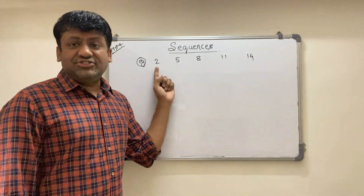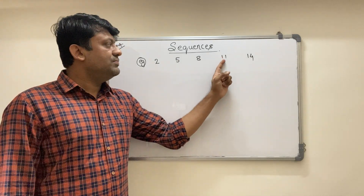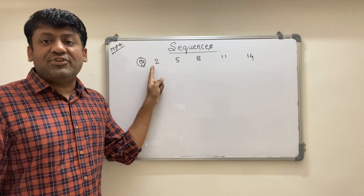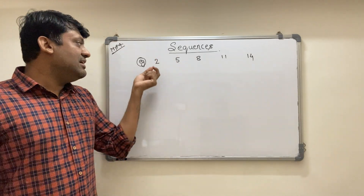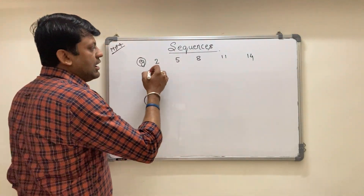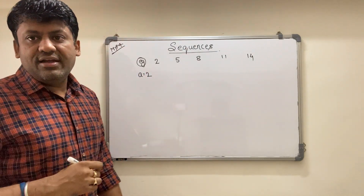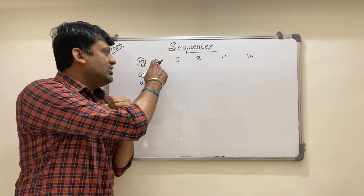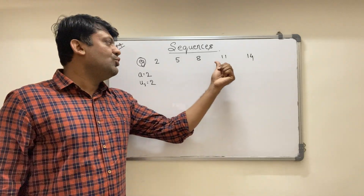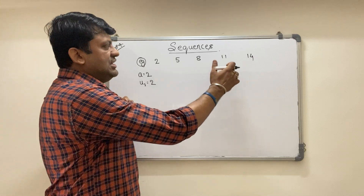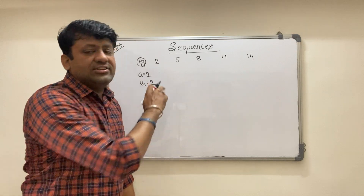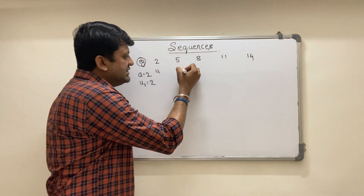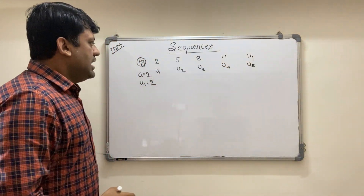In this sequence, 2 is the first term, 5 is the second term, 8 is the third term, 11 is the fourth term, and 14 is the fifth term. The first term is represented by 'a' or sometimes 'u1'. So u1 means the first term, u2 means the second term, u3 the third term, and so on. This is a finite sequence — I have limited it to five terms. It will always start with the first term, never with a0 or u0.